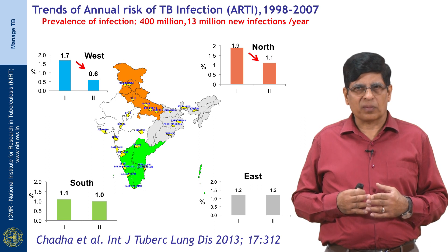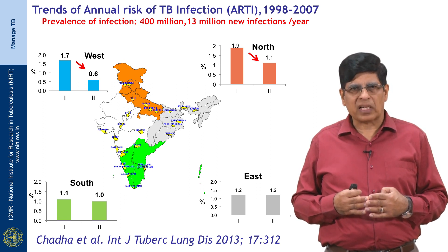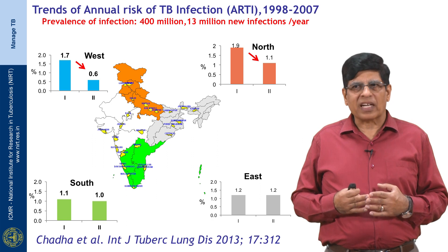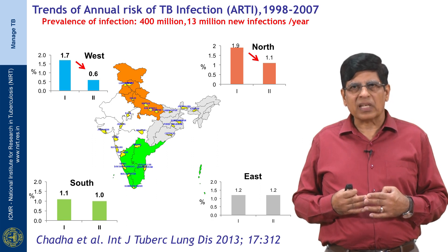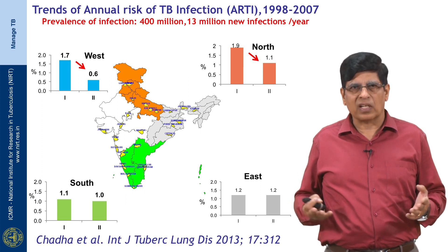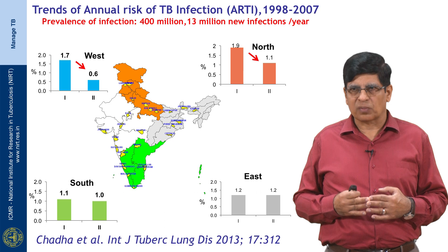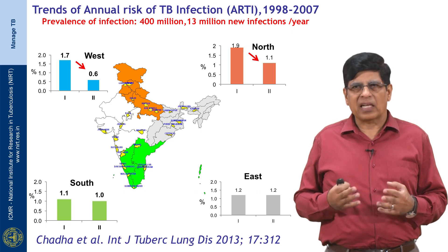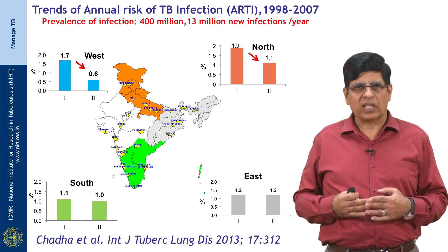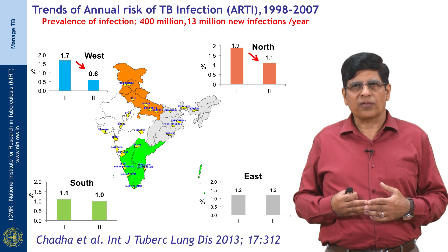Two rounds of annual risk of TB infection surveys showed a 4% decline in transmission every year, whereas in good program conditions we would expect around 10% per year. One percent of people get infected every year, meaning there are 13 million new infections per year — compare this to new HIV infections estimated at less than 100,000 per year. At any point in time, 400 million people are harboring tubercle bacilli, liable to break down to TB, so new TB cases will keep emerging in the community for years to come.